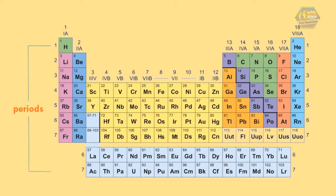Elements are arranged in periods and groups. There are seven rows of the table which are called periods, and 18 columns are called groups or families. Each group contains elements with similar properties. Groups are divided into A and B.